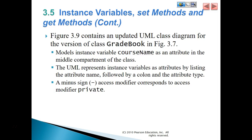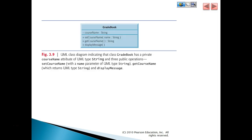The UML models the instance variable course name as an attribute in the middle compartment of the class. The UML represents instance variables as attributes by listing the attribute name, followed by a colon and the attribute type. A minus sign as an access modifier corresponds to access modifier private — in other words, it's not publicly available to use. So you can see here we have setCourseNamee, getCourseName, and displayMessage, and these are all publicly available to us.